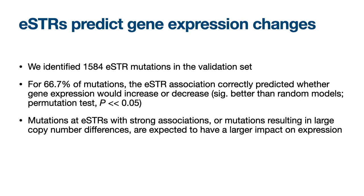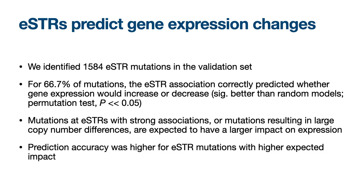Furthermore, we hypothesized that mutations at ESTRs with a strong association to gene expression, or mutations resulting in a large copy number difference, should have a larger impact on gene expression in tumors. In theory, this larger difference in gene expression should be more readily detectable and lead to better prediction accuracy. We assigned an expected mutation impact to each ESTR mutation based on the association strength and copy number difference. Indeed, for ESTR mutations with higher expected impact, the prediction accuracy was higher, fitting with the idea that these mutations result in bigger, more detectable changes in gene expression.